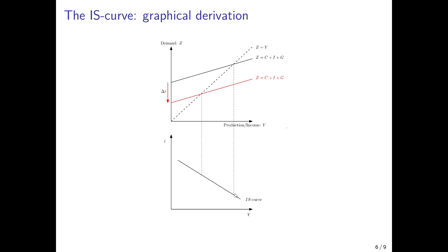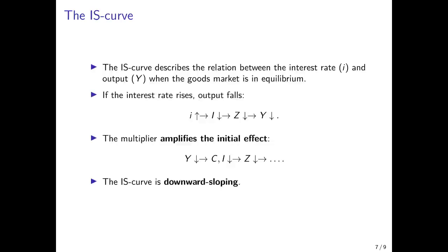And if the interest rate is low, by contrast, firms would invest a lot, and that would lead to higher incomes — households would spend more, and so on and so forth — so output and income would be higher. This diagram depicts the IS curve, where for a high interest rate, output and income are low, and for a low interest rate, output and income are high. To summarize, the IS curve describes the relation between the interest rate and output when the goods market is in equilibrium.